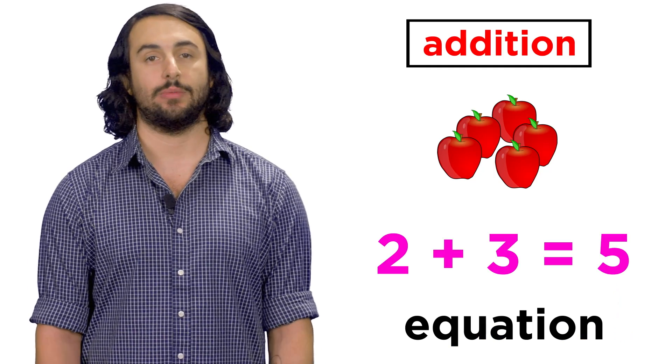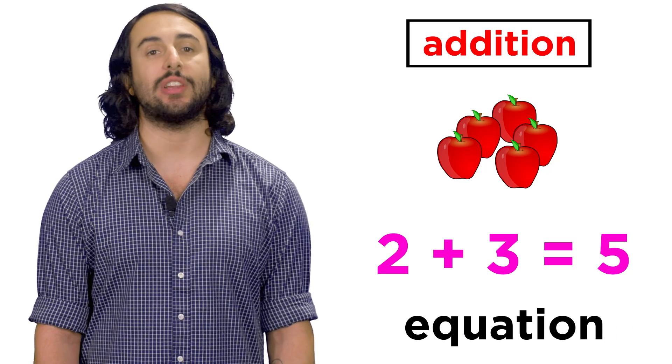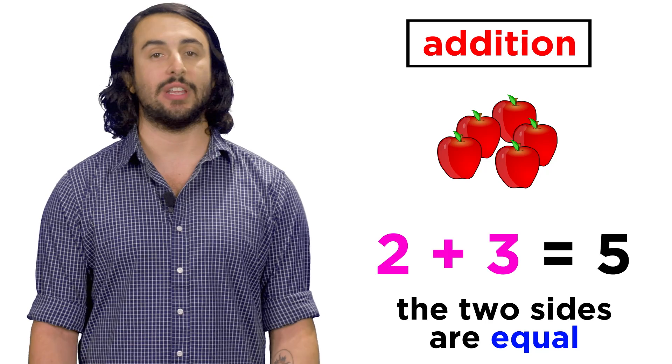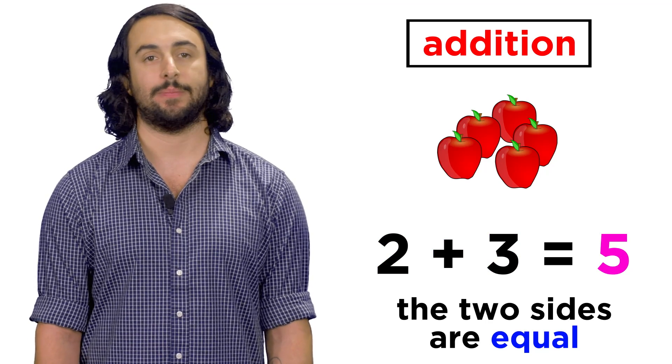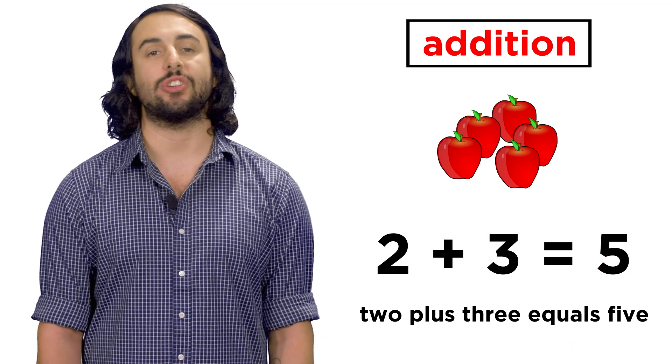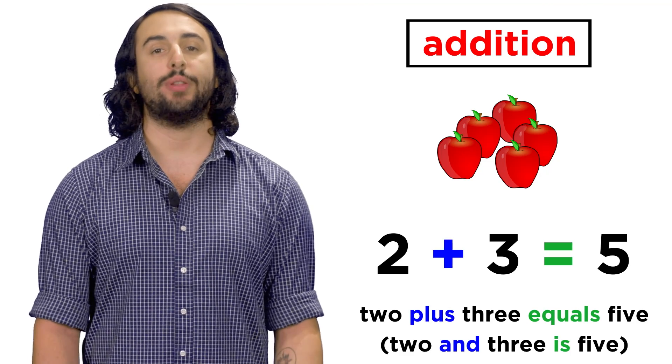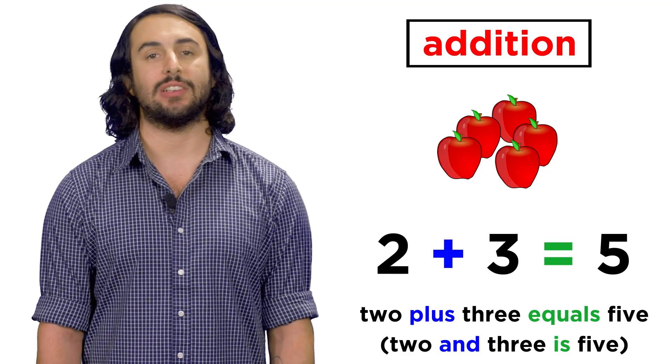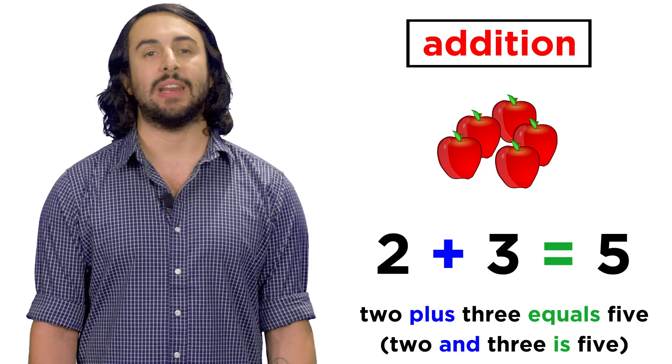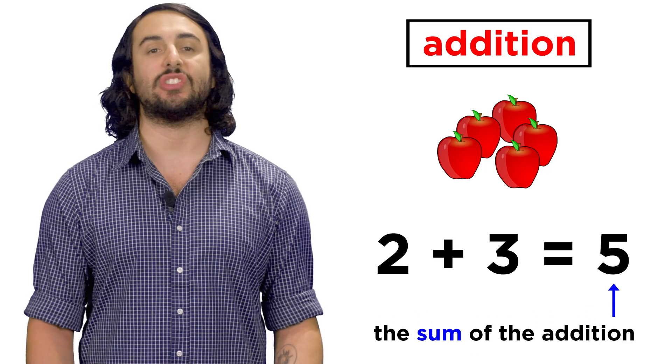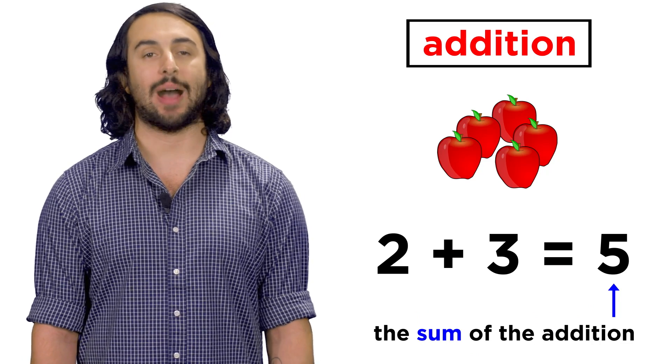This is an equation, which is a statement of equality. The expression on the left is numerically equivalent with the expression on the right. This particular equation reads two plus three equals five, with the word plus essentially meaning and, and the equals sign meaning is. Two and three is five, so five is the sum of this additive operation.